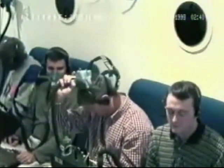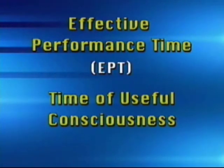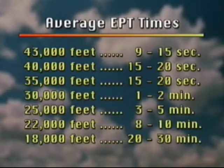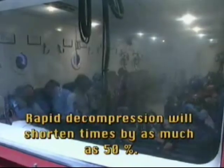Once you learn to recognize your hypoxia symptoms, you can begin to take corrective actions. Initial recovery from hypoxia can occur in a matter of seconds, while full recovery takes three to five minutes. Effective performance time (EPT) and time of useful consciousness (TUC) are two interchangeable terms used to describe human tolerance to hypoxia. They refer to the amount of time elapsed from the interruption of oxygen supply, or exposure to an oxygen-poor environment, to the time when an individual is no longer capable of performing routine flying tasks or taking corrective action. This chart shows the average EPT time at various altitudes — to be used as averages only, based on a healthy individual at rest. A rapid decompression will shorten these times by as much as 50%.